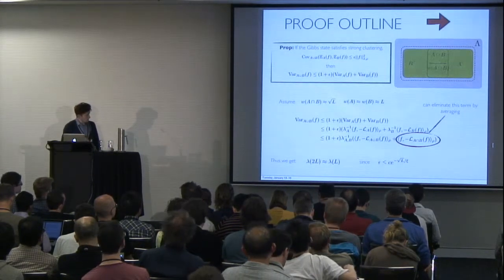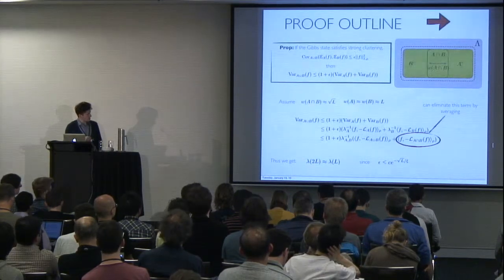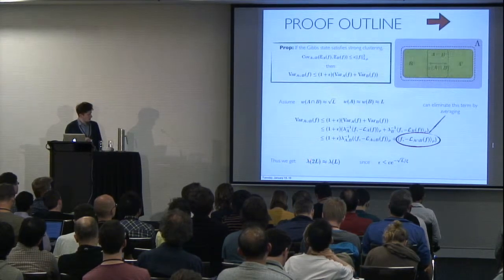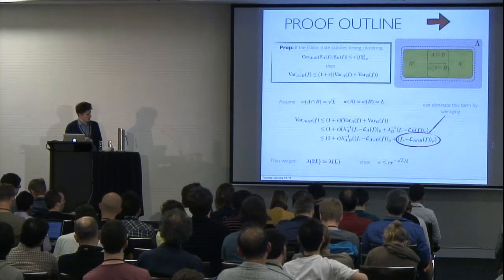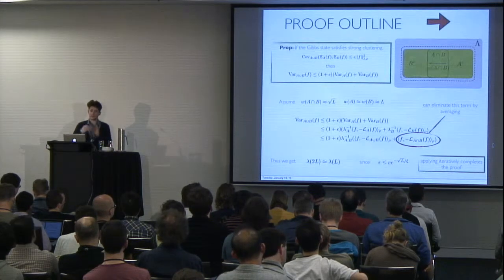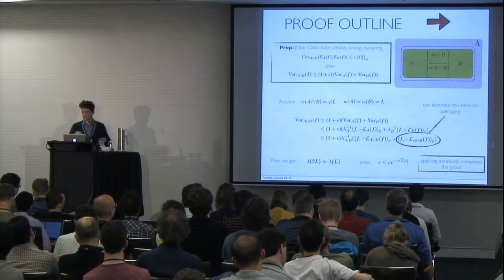In the end, what we're left with is a relationship between the gap on a system size which is roughly 2L, which is related to the spectral gap on a system size of size L. You perform this iteratively and you can estimate the spectral gap of the entire system in this manner.